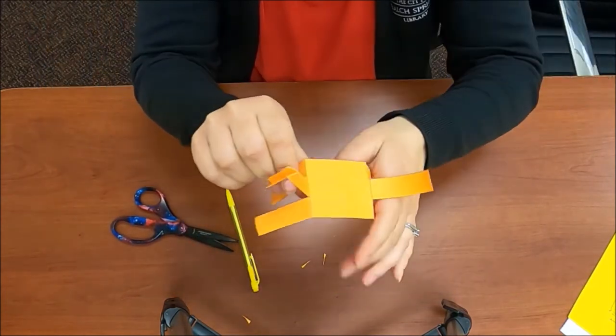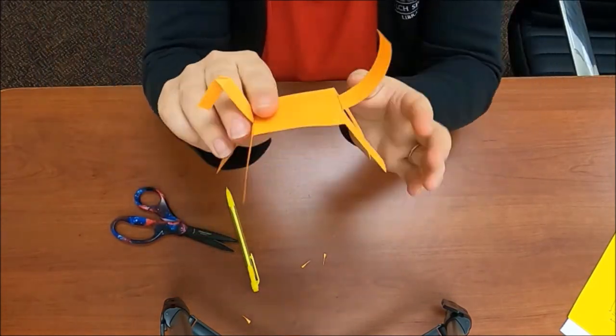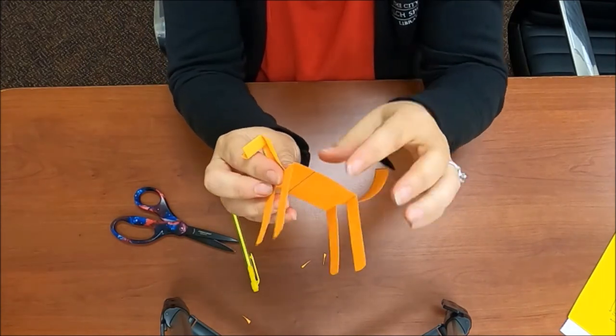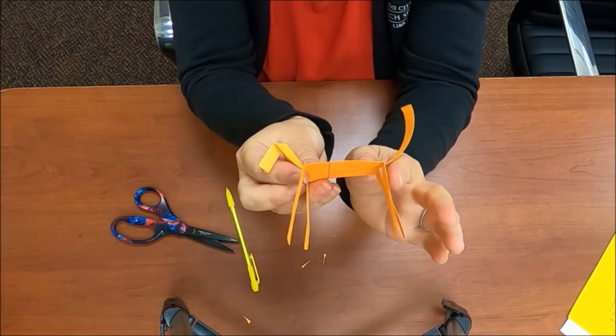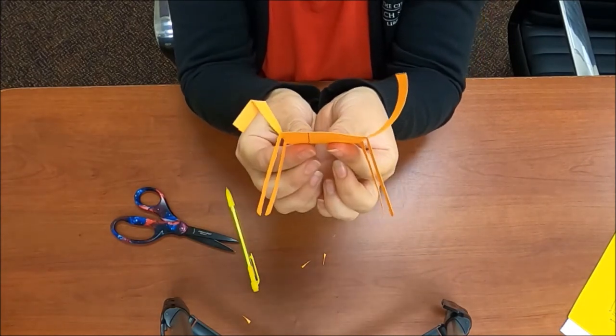And now your horsey is ready to race. The only thing is just when you're folding the legs, make sure they are balanced. The front legs are balanced together and the back legs are balanced together. And there you go, this horse is ready to race.